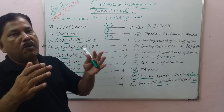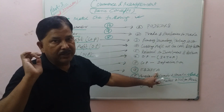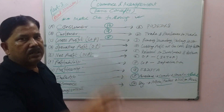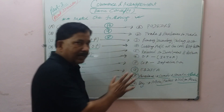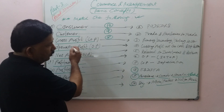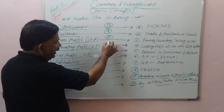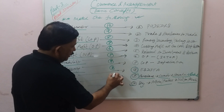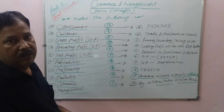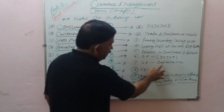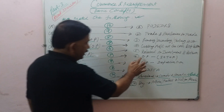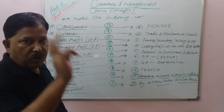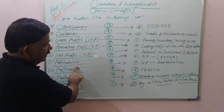Gross profit is matched with option 8 — earnings before depreciation, interest, tax, and amortization (EBDITA). For more detail, watch that dedicated video. Operating profit is gross profit minus depreciation. Net profit is operating profit minus interest, tax, and amortization. There is an important difference between depreciation and amortization — watch that video on YouTube for the full explanation.